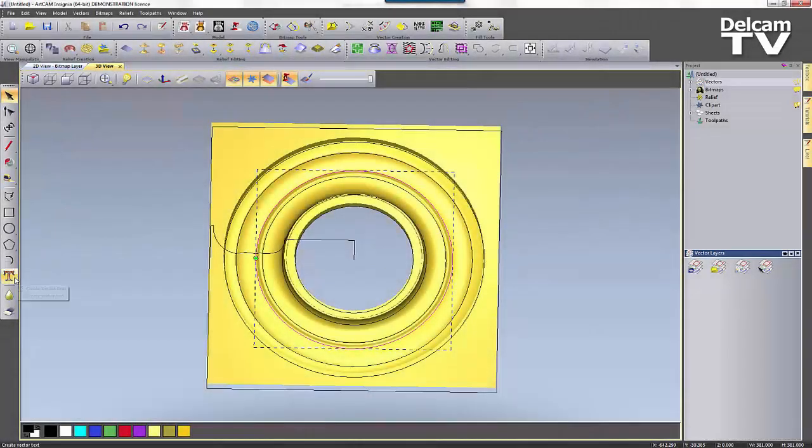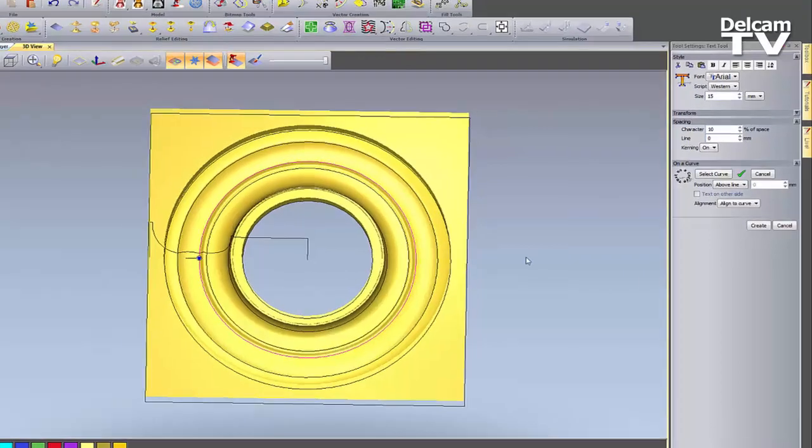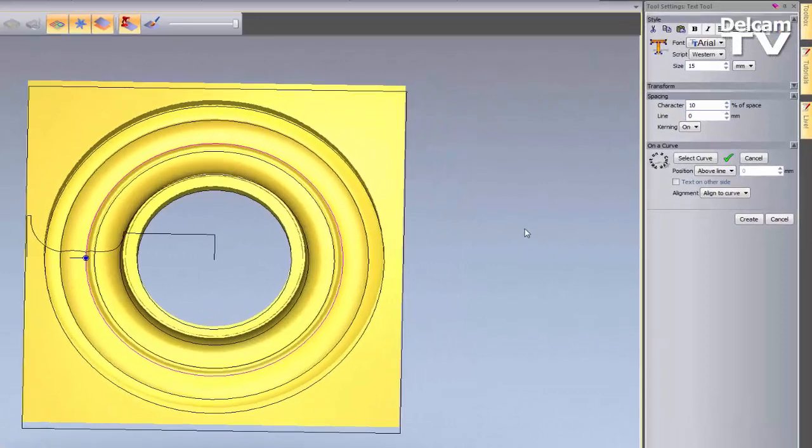In ArtCam 2015 we now have the option to create text within the 3D view and the text on the curve tool has been consolidated into the text tool.